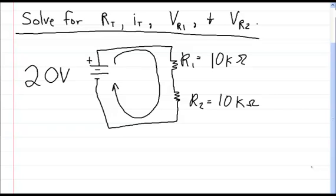Hi, thanks for watching. In this video, we're going to be solving another series circuit with two resistors. In this problem, I want you to solve for the total resistance, the total current, the voltage on R1, and the voltage on R2.